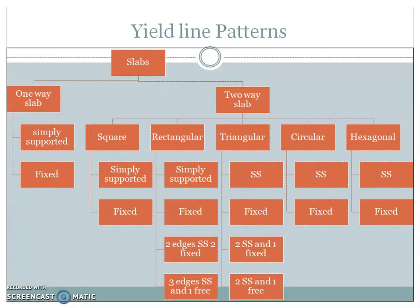Now yield line patterns — we are going to learn yield line patterns only for slabs. In slabs, we have two types: one-way slab and two-way slab. The differentiation is based on the deflection of the slab. In a one-way slab, deflection happens only in one direction, while in a two-way slab, deflection happens in both directions.